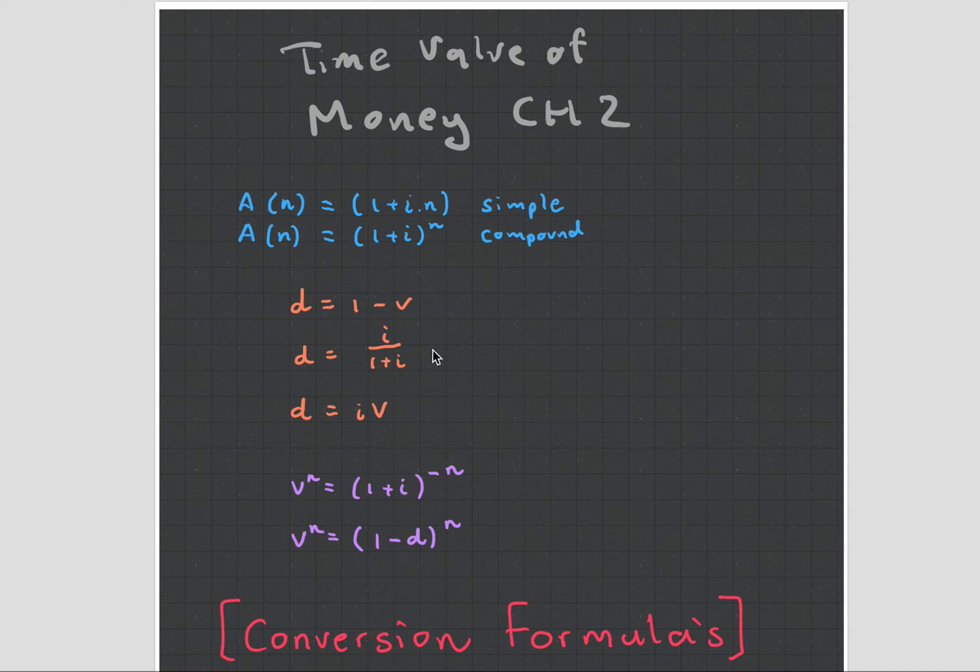It is a little tricky, so I'm going to read to you the definitions of the effective rate of interest and the effective rate of discount. The effective rate of interest over a given time period is the amount of interest a single initial investment will earn at the end of the time period, expressed as a proportion of the initial amount.